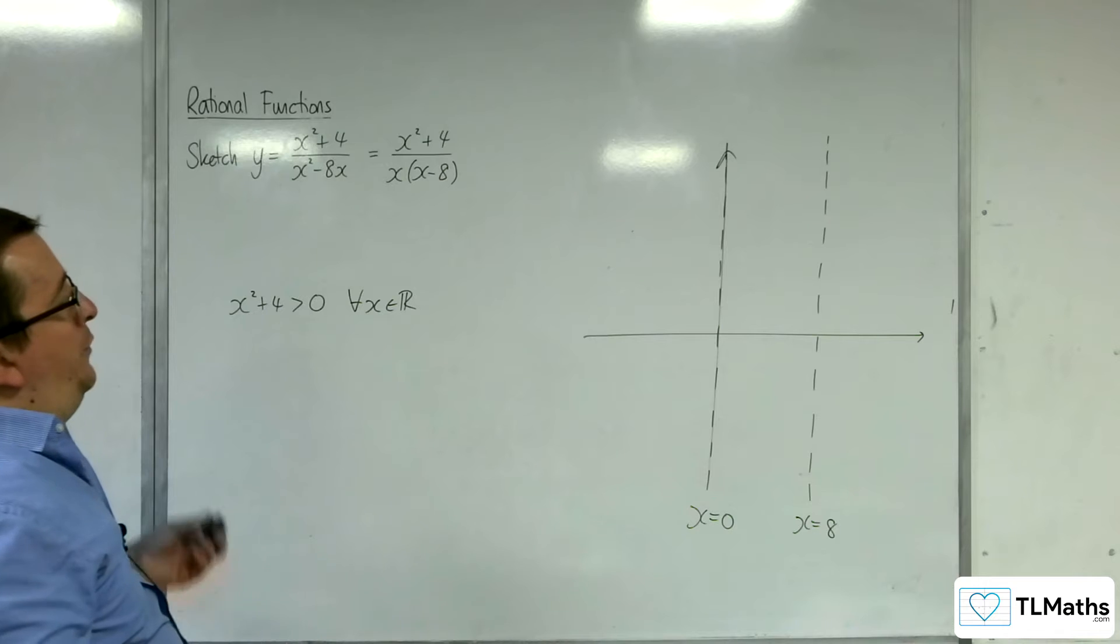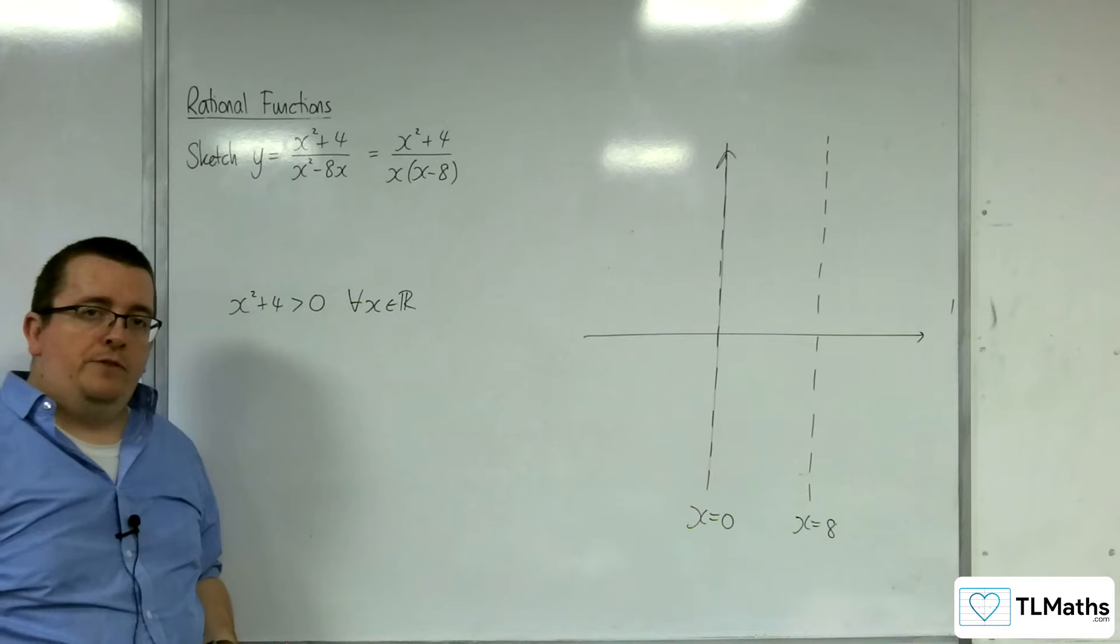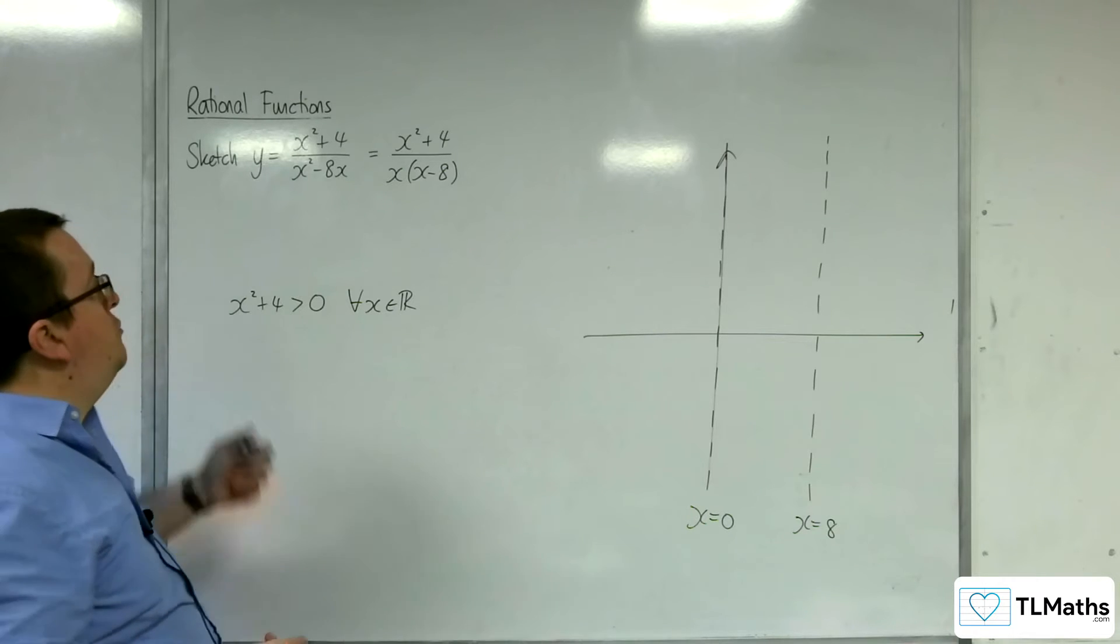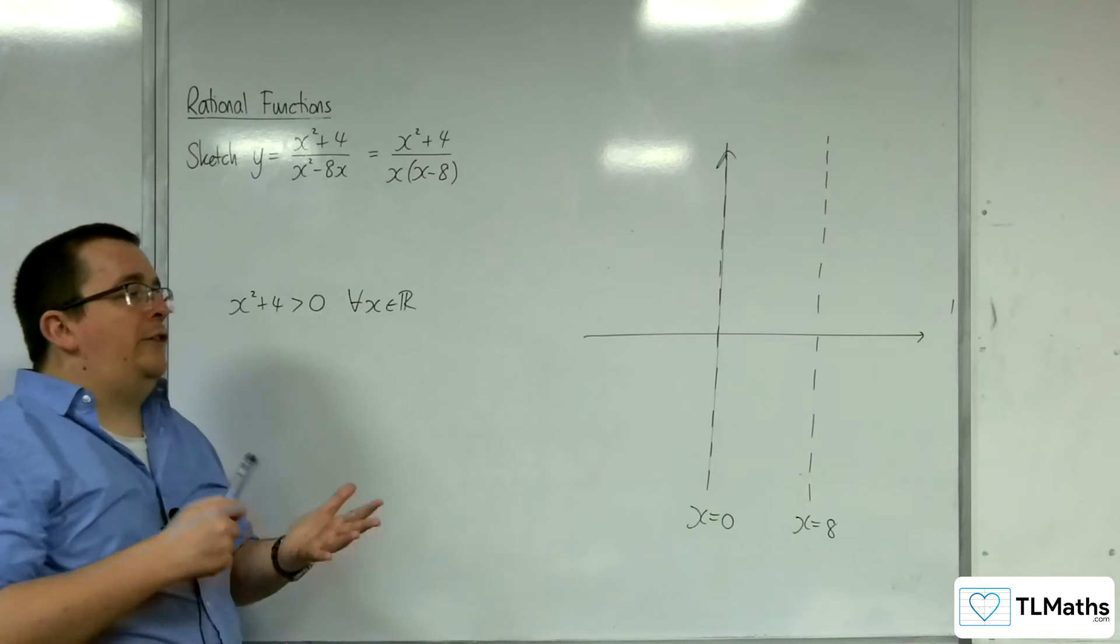How about where it crosses the y-axis? Well, it doesn't cross the y-axis either because there's a vertical asymptote there. When x = 0, we're dividing by 0, so we're not crossing the x or y-axis.